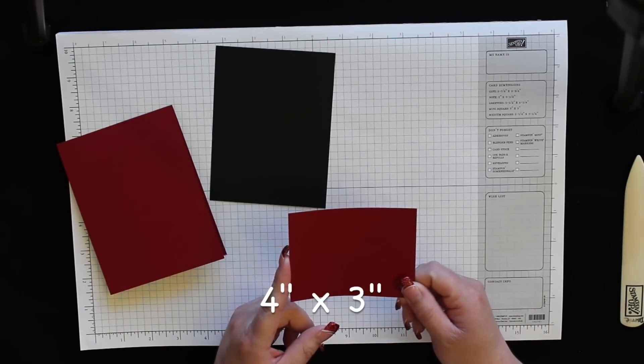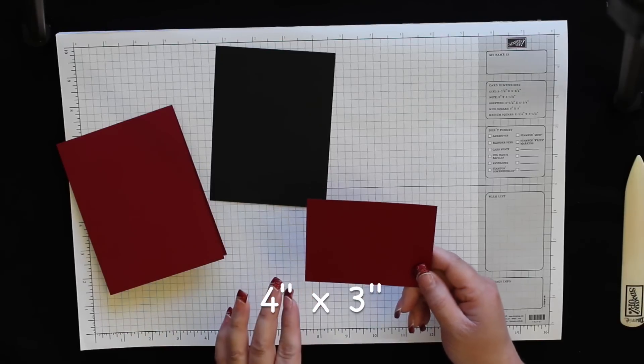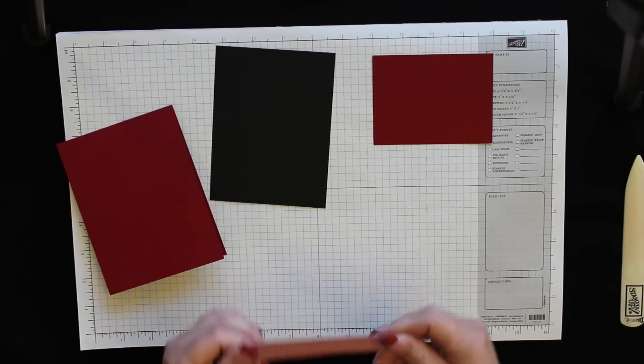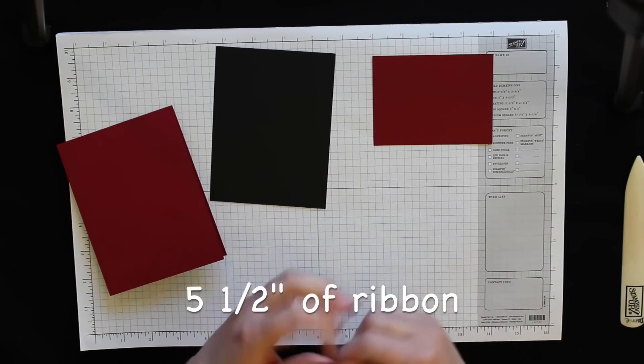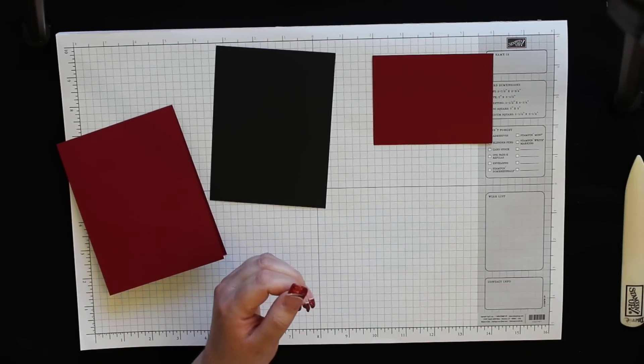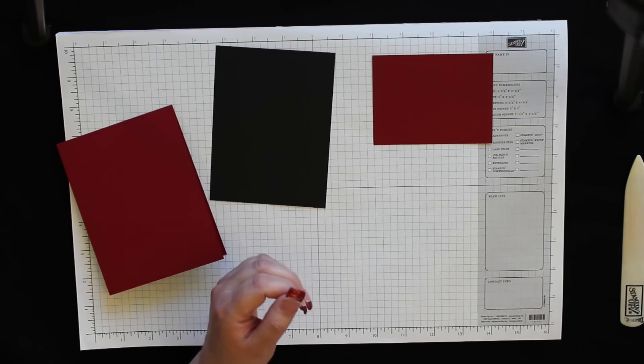As well for the front you'll need a piece of, this is our Cherry Cobbler Chevron ribbon, it's about 5 1/2 inches long, and you'll need a scrap of Whisper White cardstock to do some stamping.